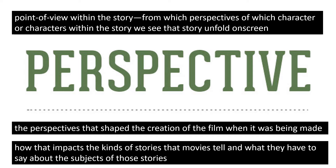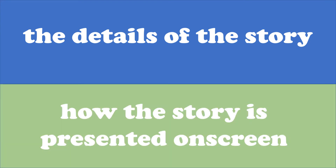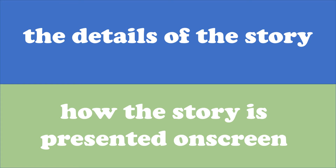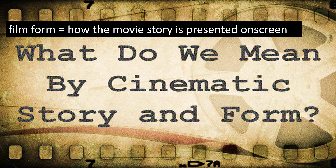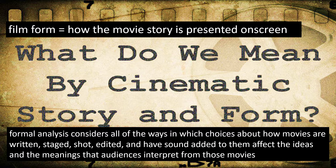This is also something we will be examining in this class. When it comes to analyzing movie stories, analyzing the story itself is only one part of what we look at. The other part is the way that the story is presented to audiences on screen. How the story is presented is the form that the movie takes, so this kind of analysis is known as formal analysis. Formal analysis considers all of the ways in which choices about how movies are written, staged, shot, edited, and have sound added to them affect the ideas and meanings that audiences interpret from those movies.